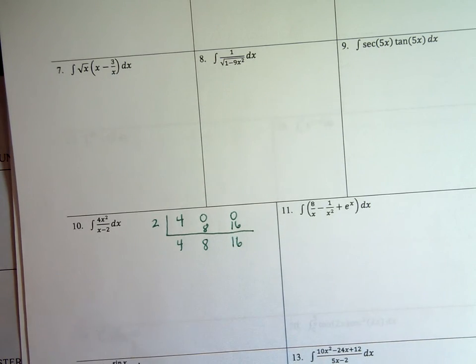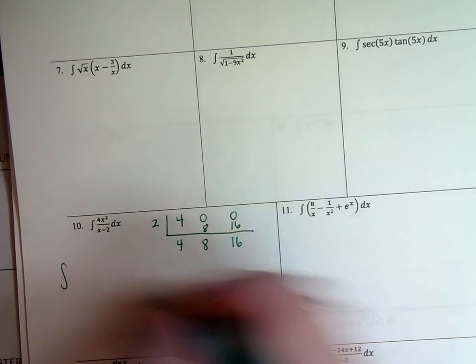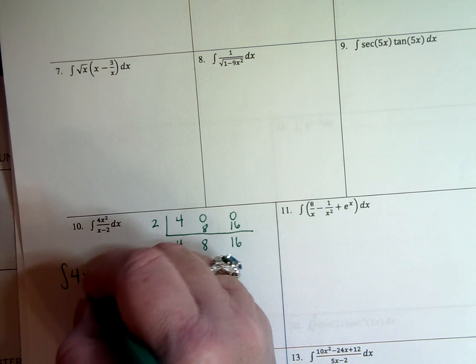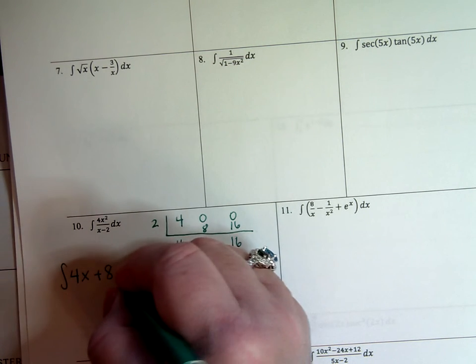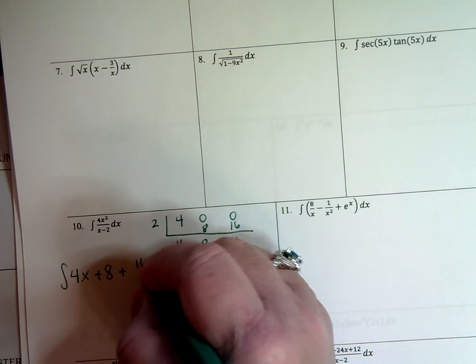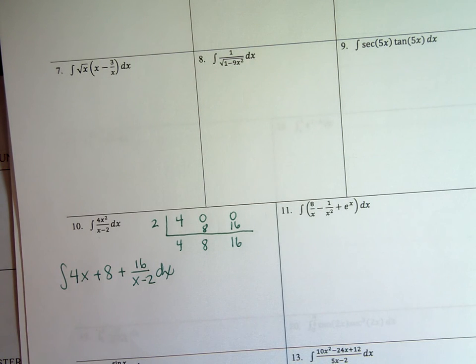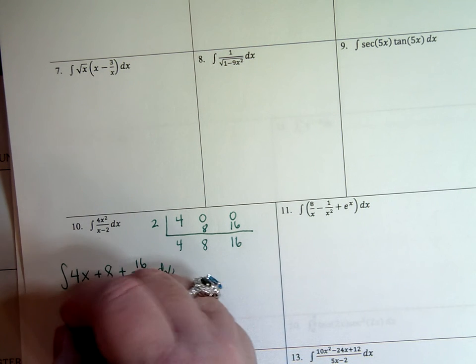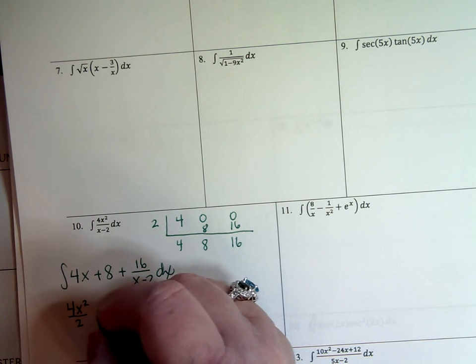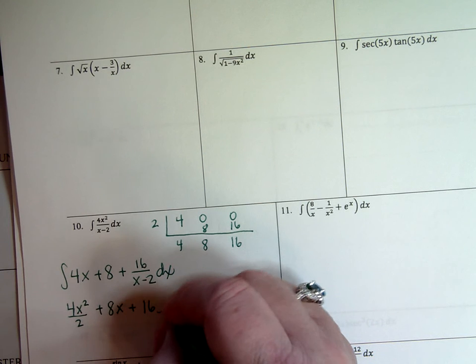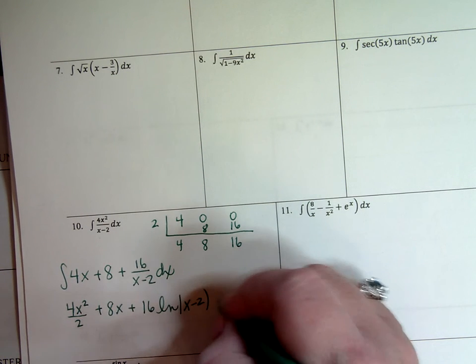And so I end up with my integral, my new integral, new and improved, is a 4x. I have plus 8 plus my remainder of 16 over x minus 2. That's my new and improved integral. Take the anti-derivative of each piece. Figure out your integral. It's going to be 4x squared over 2, take it to one more power, plus 8x. And then remember this guy turns into a 16 ln of x minus 2 plus c.